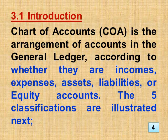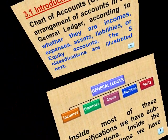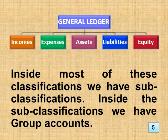Section 3.1 Introduction: The Chart of Accounts (COA) is the arrangement of accounts in the general ledger, according to whether they are incomes, expenses, assets, liabilities, or equity accounts. The five classifications of accounts in the general ledger are incomes, expenses, assets, liabilities, and equity. Inside most of these classifications we have subclassifications.